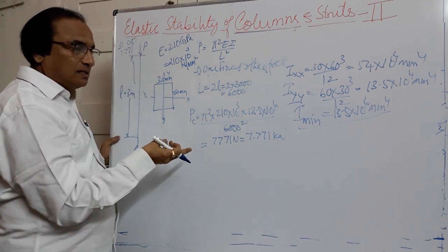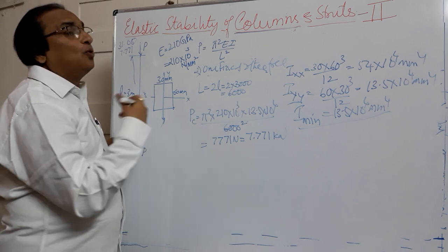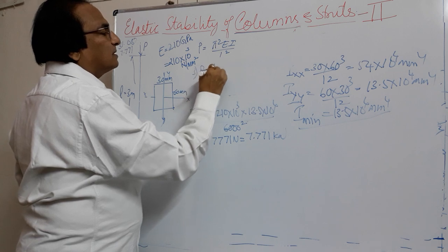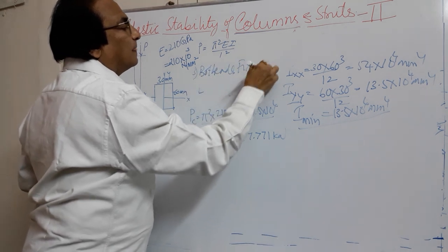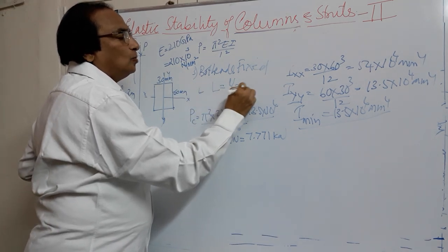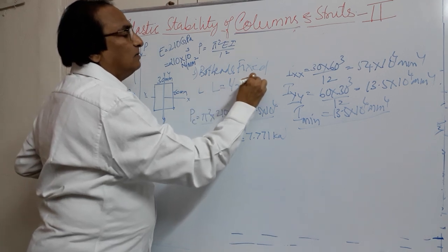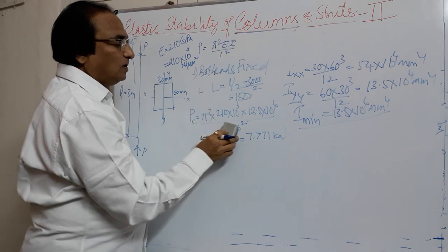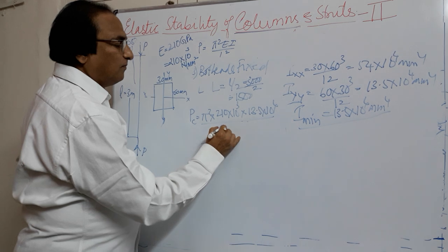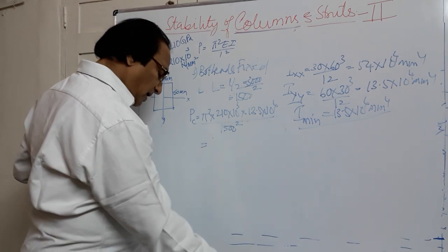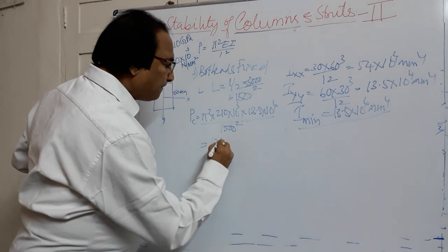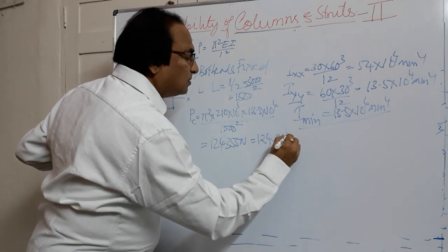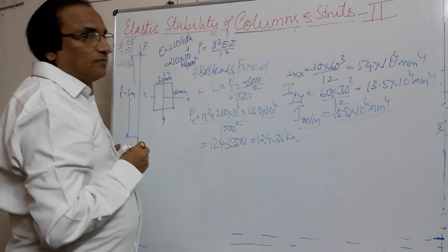The third condition is both ends fixed. The effective length is L/2 = 3000/2 = 1500 mm. Substituting into the formula with L = 1500: Pc = π²EI / 1500². If you simplify this, you get 124,355 N, which is 124.36 kN.